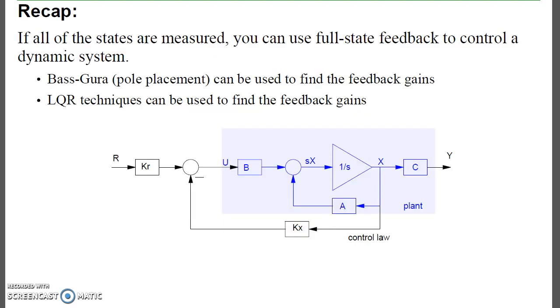As a recap, if all the states of a system are measured, you can use full state feedback to control a dynamic system. You can use either Bass-Gora pole placement to find the feedback gains, or LQR techniques.